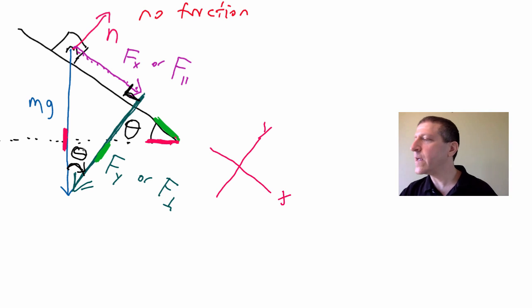That tells us immediately that F sub X, which I'm going to use, is going to be equal to, and you're going to want to practice with your vectors so you've got to get good at it. F_X is equal to mg sin(theta). It's the hypotenuse times the sine of the angle because it's the opposite.